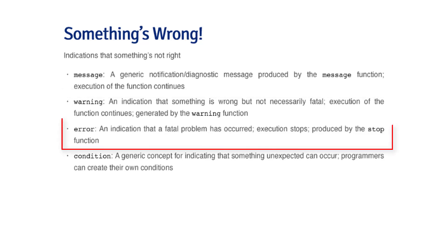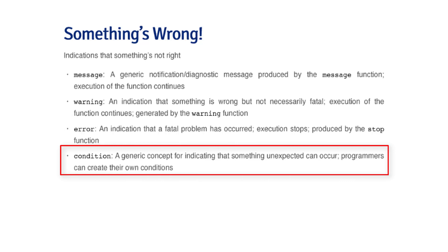Messages are generated by the message function, warnings by the warning function, and an error is the last stop — a fatal problem that stops execution of the function. Error messages are produced by the stop function. Then there's a general notion of a condition, a higher-level concept encompassing all three. You can create new conditions if you wanted to, for cases that are not an error, warning, or message.